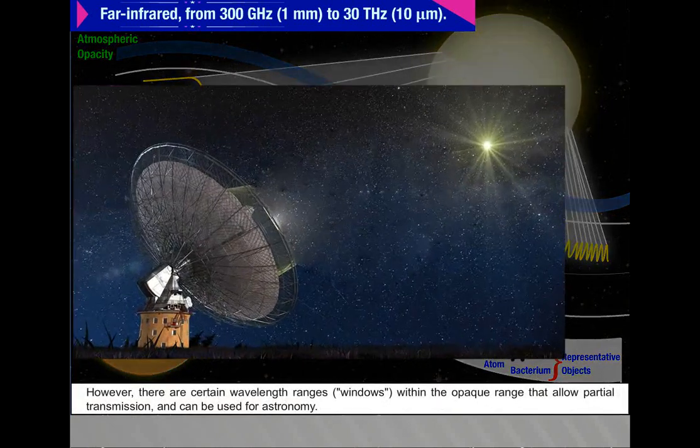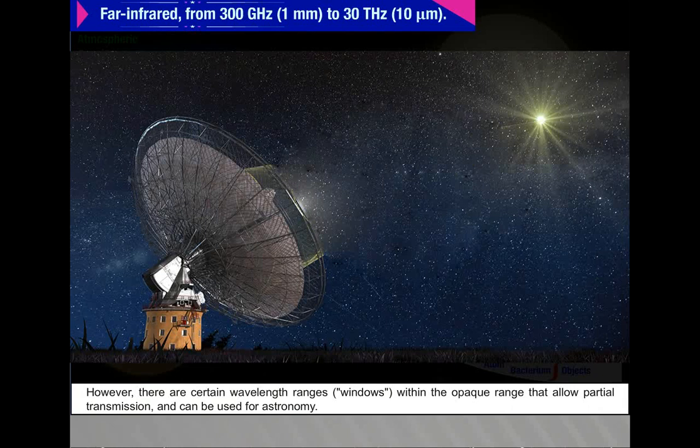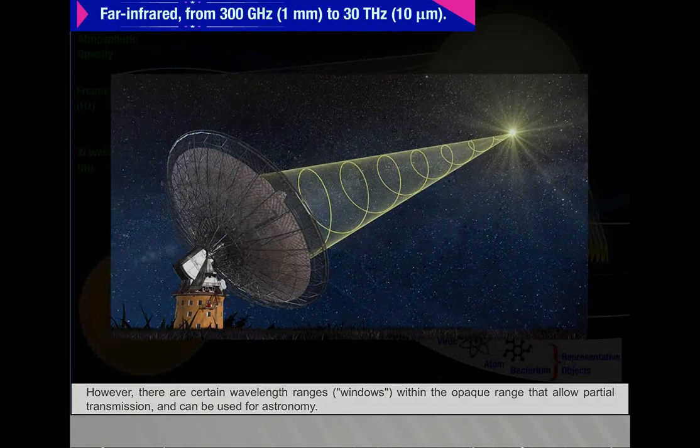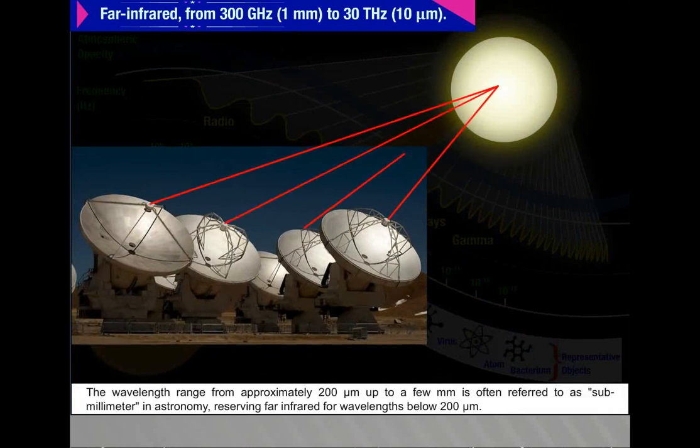However, there are certain wavelength ranges within the opaque region that allow partial transmission and can be used for astronomy. The wavelength range from approximately 200 micrometers up to a few millimeters is often referred to as sub-millimeter in astronomy, reserving far infrared for wavelengths below 200 micrometers.